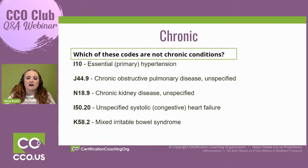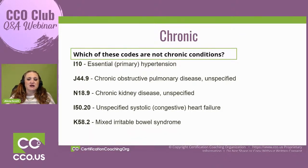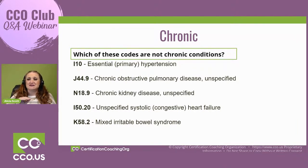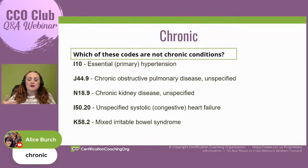Here are some examples. Let's talk about each one and you tell me if they are considered chronic or not. First, hypertension, I-10. Is that considered chronic? With I-10, there are several things that can describe it — essential and primary, benign, malignant. There's a lot of different information that would state that it's chronic.